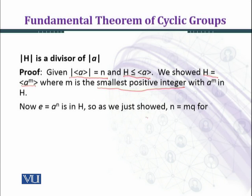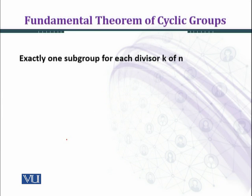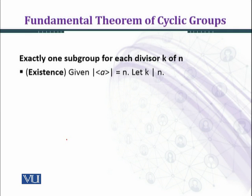We have shown that n equals mq for some integer q. Now the order of a^m equals q, which is a divisor of n, as required.